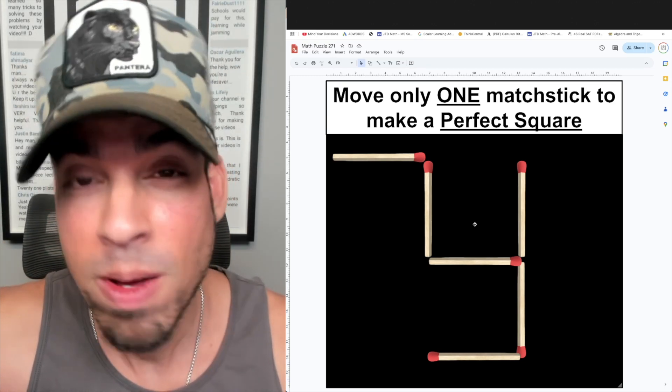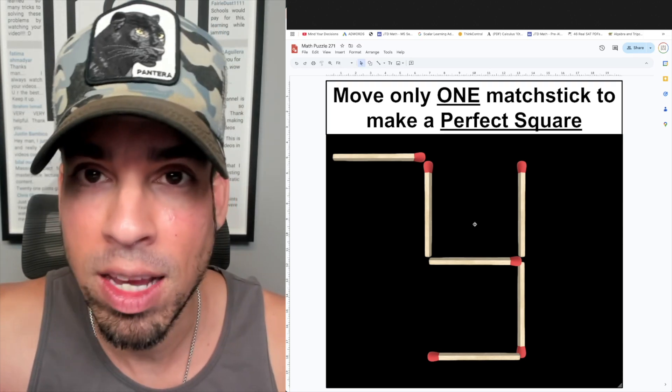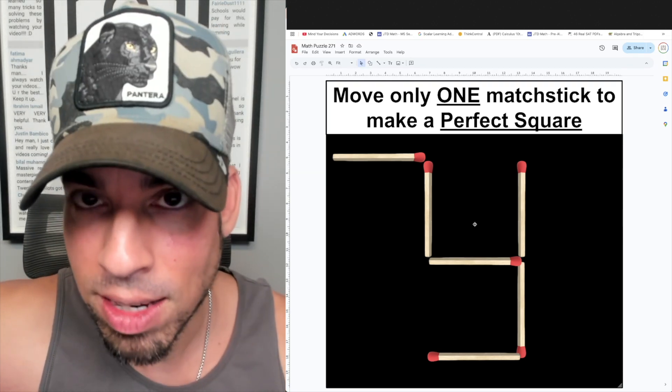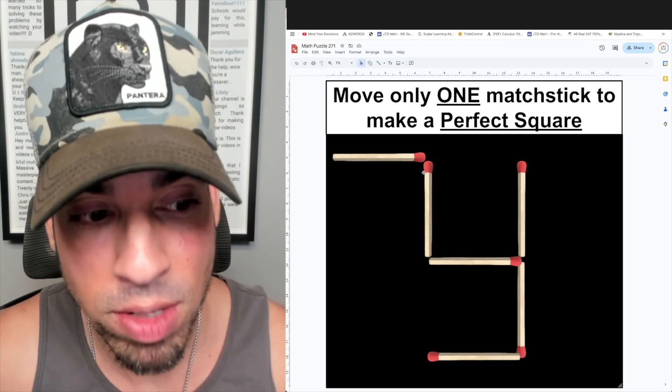But if you think about other definitions of what a perfect square might be in mathematics and in numbers, you might think of perfect square numbers like one, like four, and like nine.